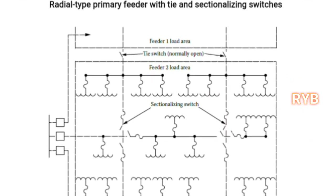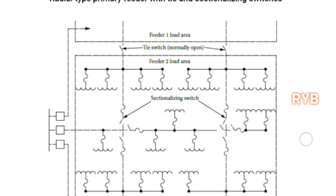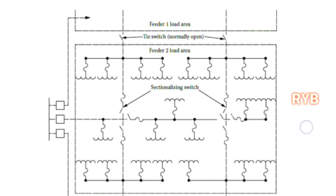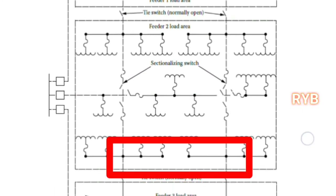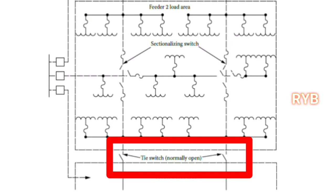The second type is the radial primary feeder with tie and sectionalizing switches. The disadvantages of the radial primary feeder are overcome by providing tie and sectionalizing switches to increase reliability and continuity of power supply. Three feeders — phase 1, phase 2, and phase 3 — are provided. For each feeder, tie and sectionalizing switches are provided. Tie switches are normally open.